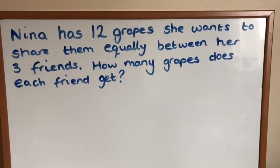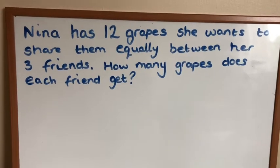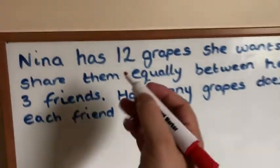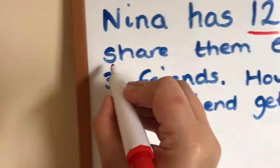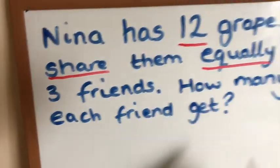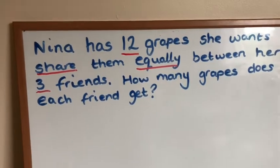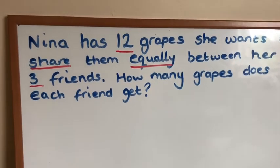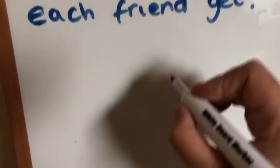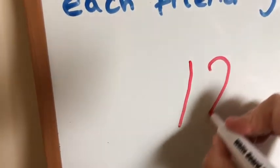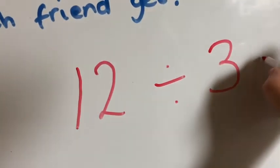The first thing I'm going to do with this word problem is identify the important information I'll need to solve the problem. We have 12 grapes, and she wants to share them equally between her three friends. So we know 12 grapes are going to be shared equally between three, meaning each friend is going to have the same amount. The number sentence would be 12 divided by three equals.